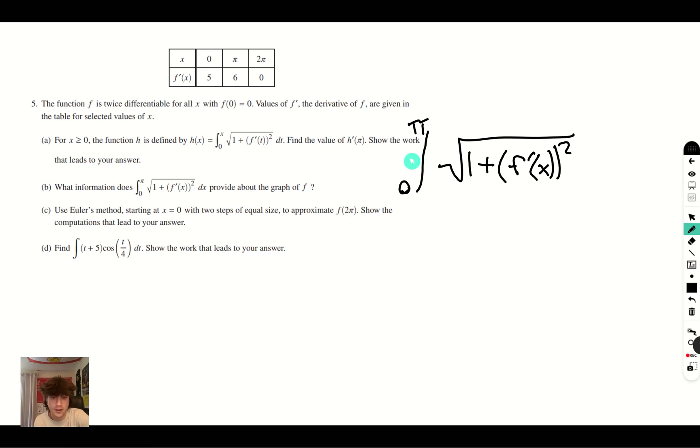And since we got rid of the integral, we're just plugging in the point π. So we get √(1 + (f'(π))²). As we can see here, f'(π) is 6, so we get 6², which will give you 36, and we end up with √37.